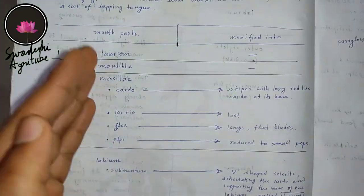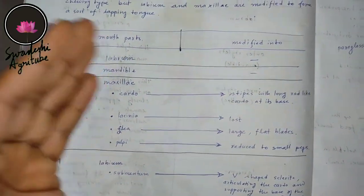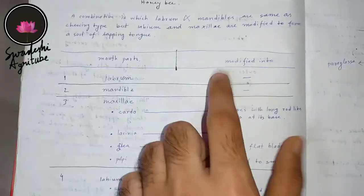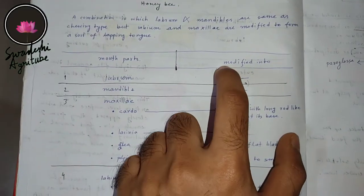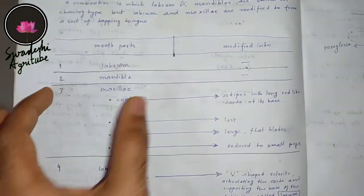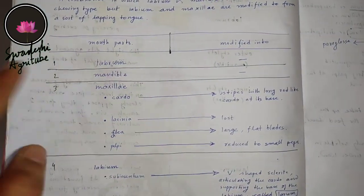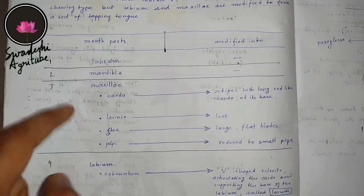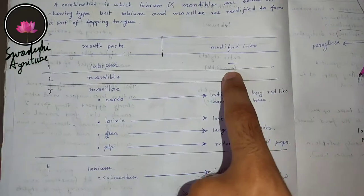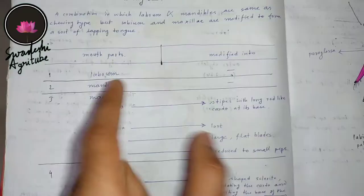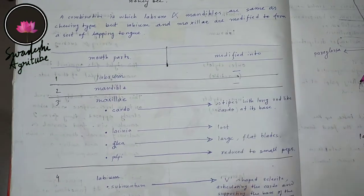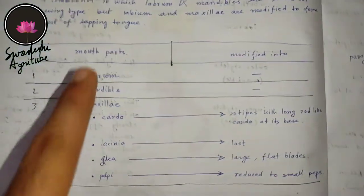As usual, you have to make a chart where on the left side it will be mentioned as 'mouth part' and on the right side 'modified into.' In this section you have to mention labrum, mandible, maxilla, and labium, and in the right part you will mention how these mouth parts are modified.